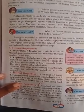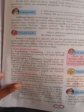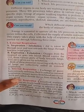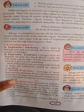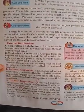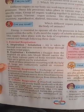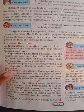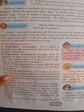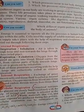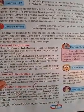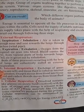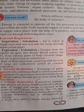Internal respiration is the exchange of gases — oxygen and carbon dioxide — between the cell and the tissue fluid. Oxygen moves from the blood into the tissue fluid, and carbon dioxide moves from the tissue fluid into the blood.